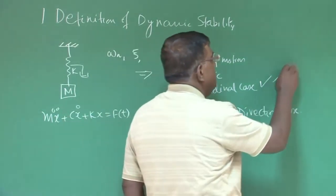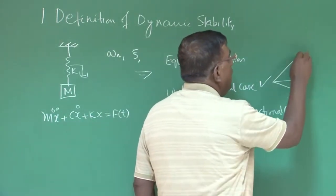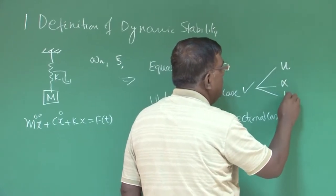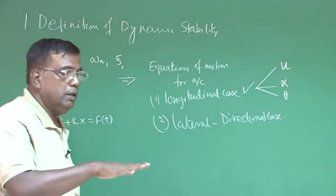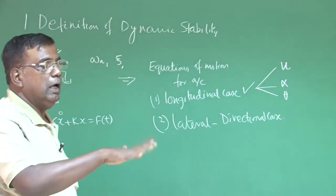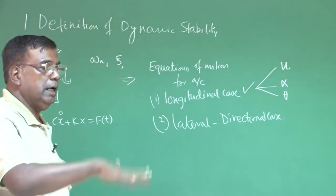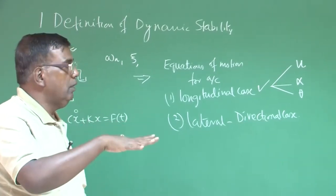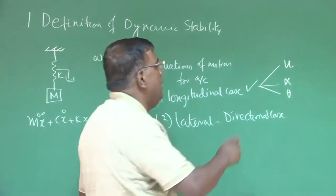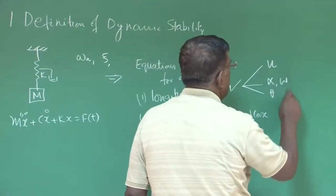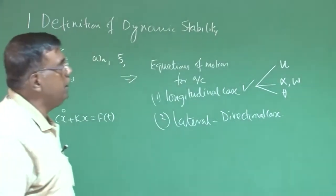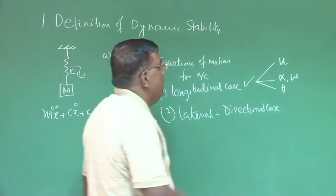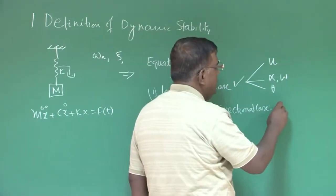For longitudinal case, we studied how u is changing, how alpha is changing, how theta is changing - that is u, alpha means indirectly I am talking about this motion, the alpha is vertical by the horizontal speed and also pitching theta like this. When I write alpha, I also mean w, the vertical component. So there are three variables, the alpha and w are linked.